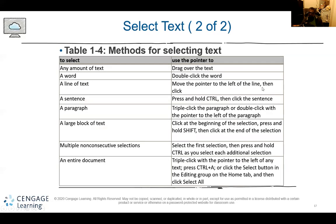Methods for selecting text: for any amount of text, drag over the entire thing. For a word, double-click on the word and it will automatically highlight it. To align the text, move the pointer to the left of the line and then click. For a sentence, press and hold Control. For a paragraph, triple-click the paragraph or double-click with the pointer to the left of the paragraph. As you can see, you can highlight several different sections and the selection only gets larger.